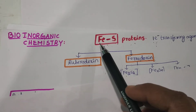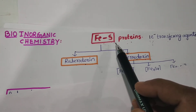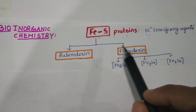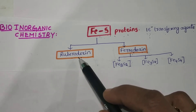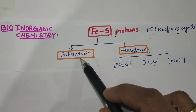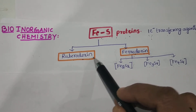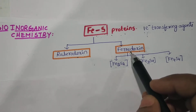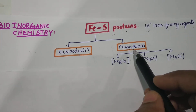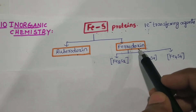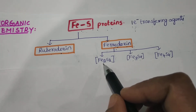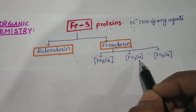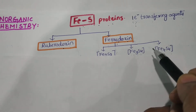Hi everyone, today we are going to discuss about FES proteins. In FES proteins I already discussed rubredoxin in the last class — please check that one. The next topic is ferredoxin. Ferredoxin has three types: Fe2S2, Fe3S4, and Fe4S4.